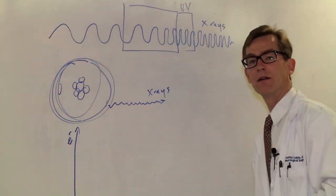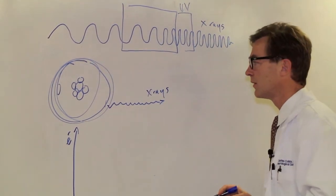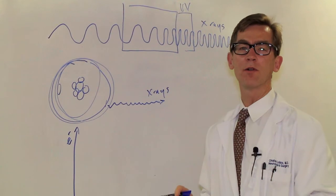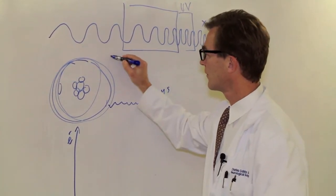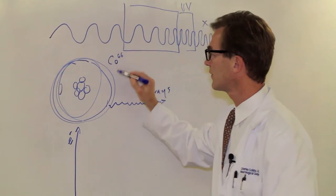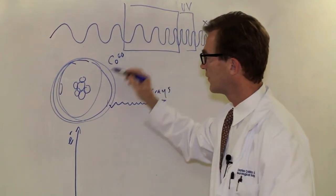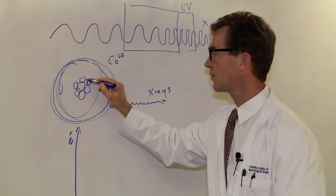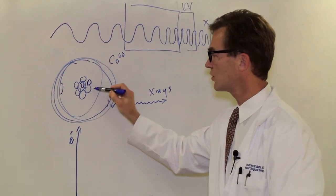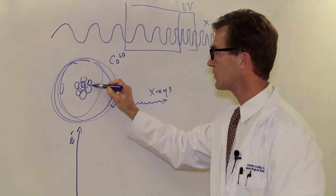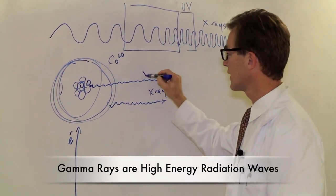Another way that radiation can be generated is by having an unstable atom like cobalt-60. This is an unstable isotope of cobalt such that the neutrons and protons within the center of the atom will shift over time, and when they shift they can release high energy radiation waves called gamma rays.